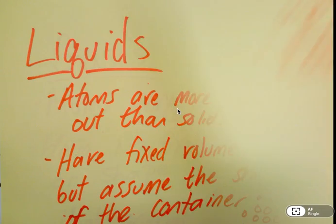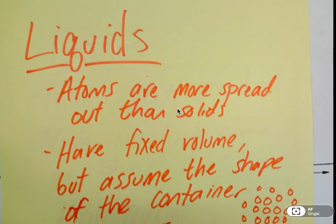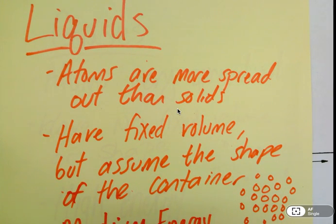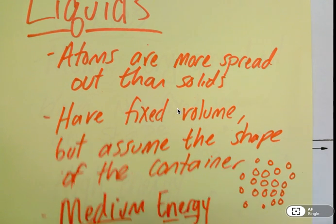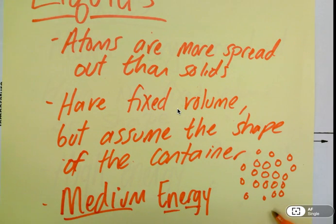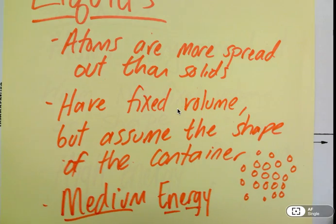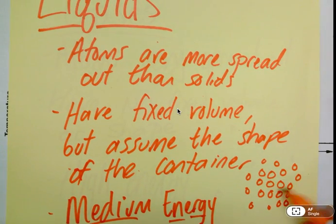Our next phase of matter are liquids. In a liquid, atoms are more spread out than in solids, so they have a little more space to work with. They have a fixed volume but assume the shape of a container. So if you have a glass of water, that water will take up a certain amount of space and that does not change, but it's going to be shaped whatever the shape of the glass is. These particles have medium amounts of energy, relatively speaking, so they're moving around a little bit faster than they were with solids, which allows them to spread out a little bit more.